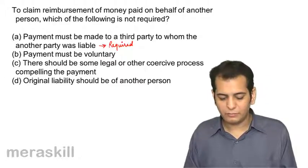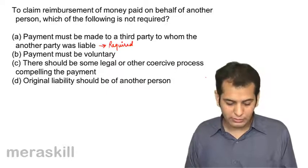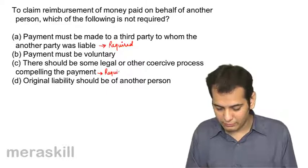Option B: payment must be voluntary. Option C: there should be some legal or other coercive process compelling the payment — this is also required. There must be some legal or coercive process; meaning he should have paid under some legal or other pressure. The original liability should be of another person — this is also required. So what is not required is that the payment must be voluntary. The payment should be involuntary and under some coercive or compelling pressure. The answer is B.